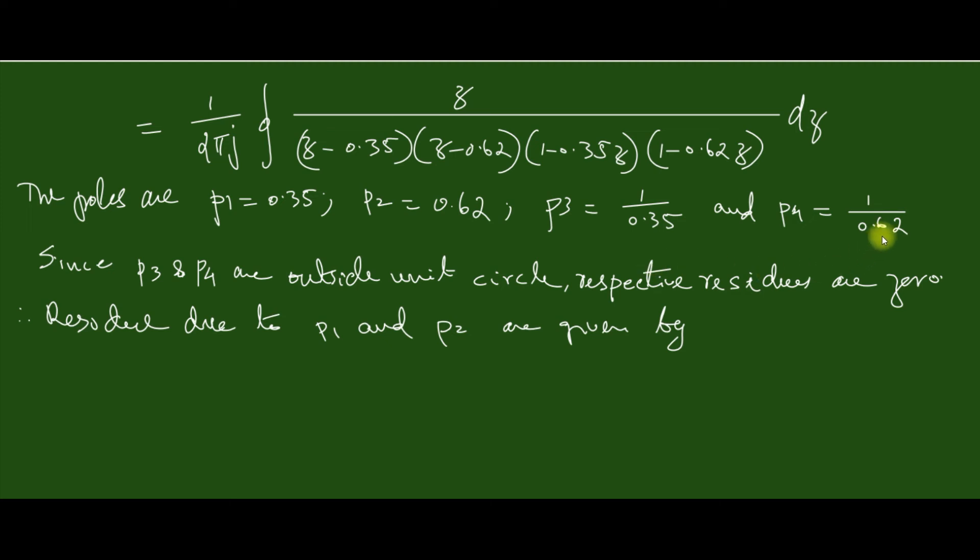Here we can see that this p3 and p4 are greater than 1. That is, the poles are outside the unit circle. So the residue due to these two poles will be zero.